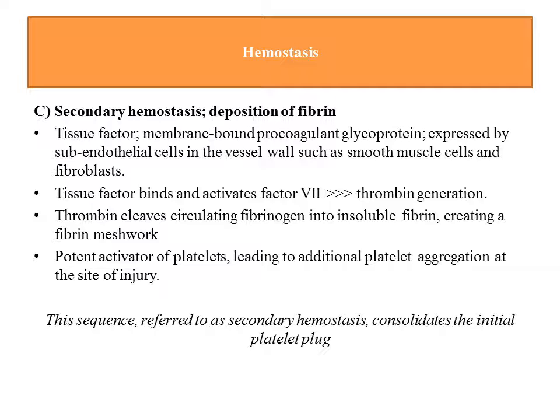Thrombin has different effects. Thrombin cleaves circulating fibrinogen into insoluble fibrin. The final result of the coagulation cascade — whether starting from the intrinsic or extrinsic pathway — is the formation of fibrin from fibrinogen, creating a fibrin mesh. Within the aggregated platelets, there is deposition of fibrin threads. Thrombin is also a potent activator of platelets, leading to additional platelet aggregation at the site of injury, increasing the size of the hemostatic plug.